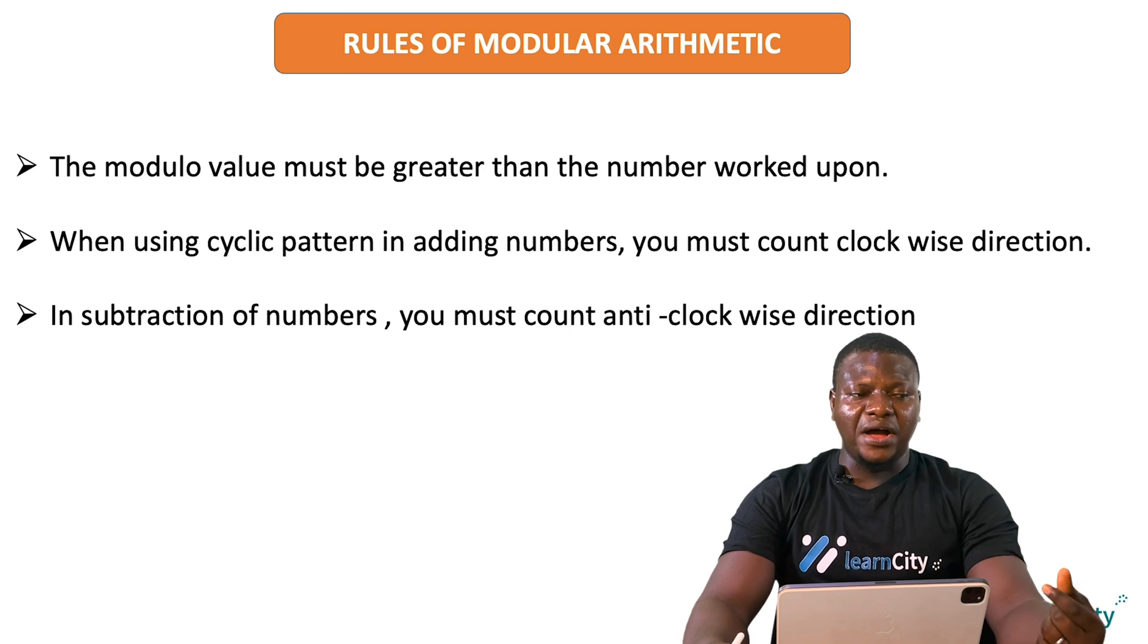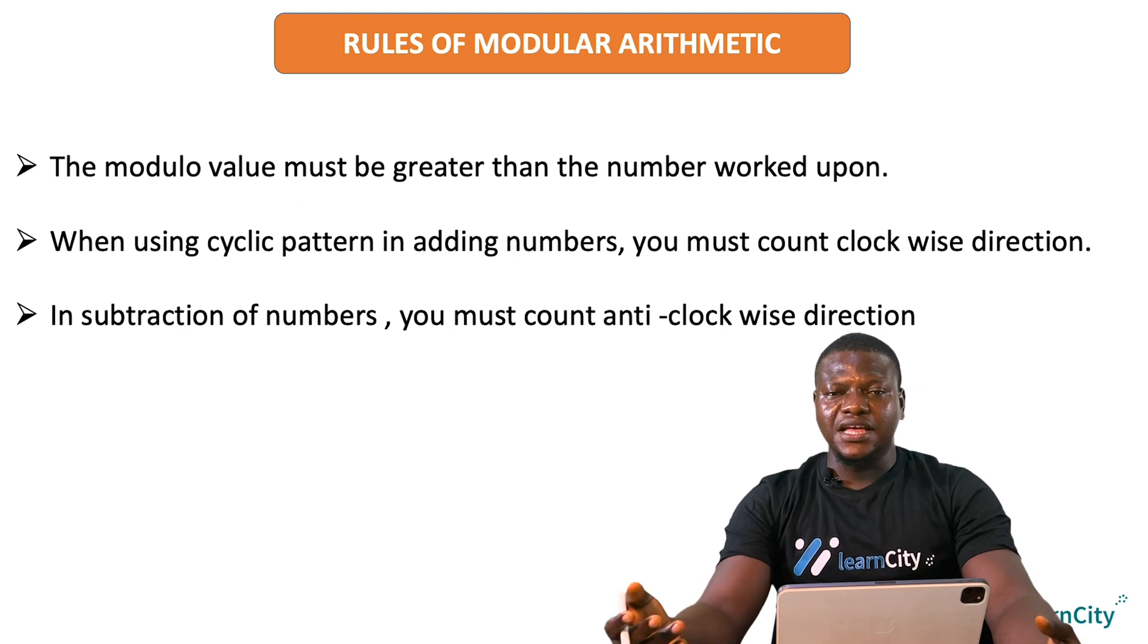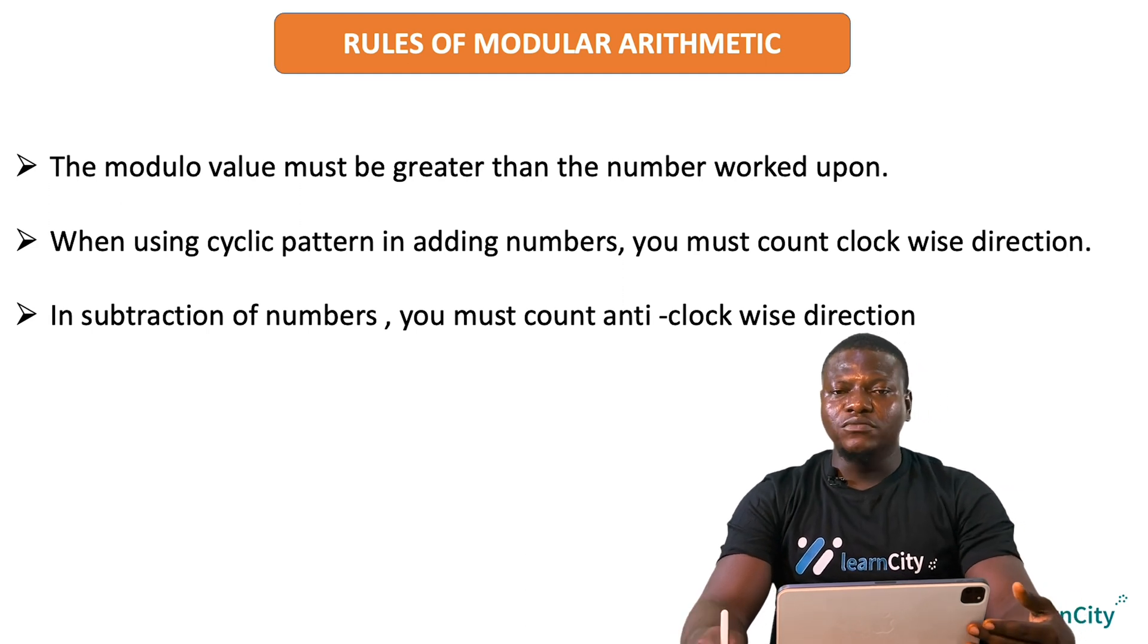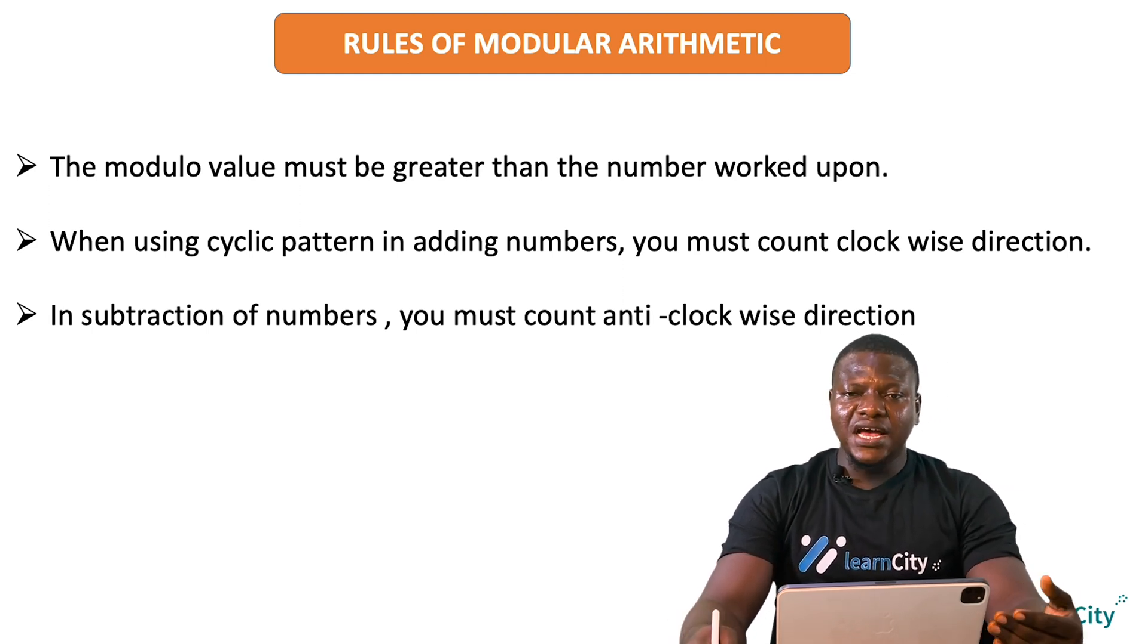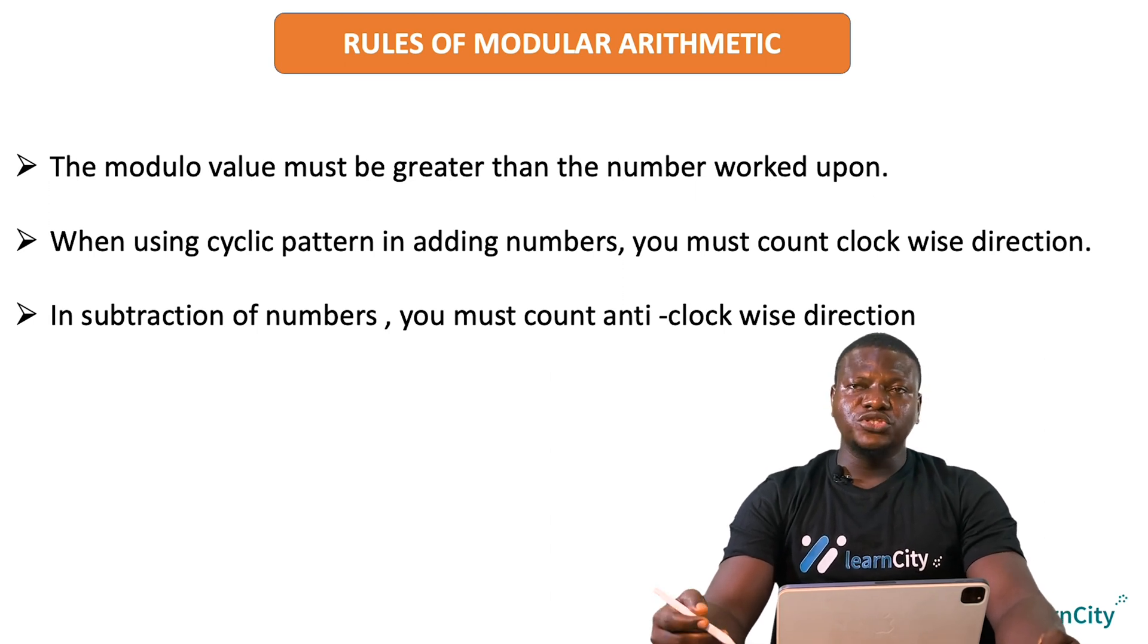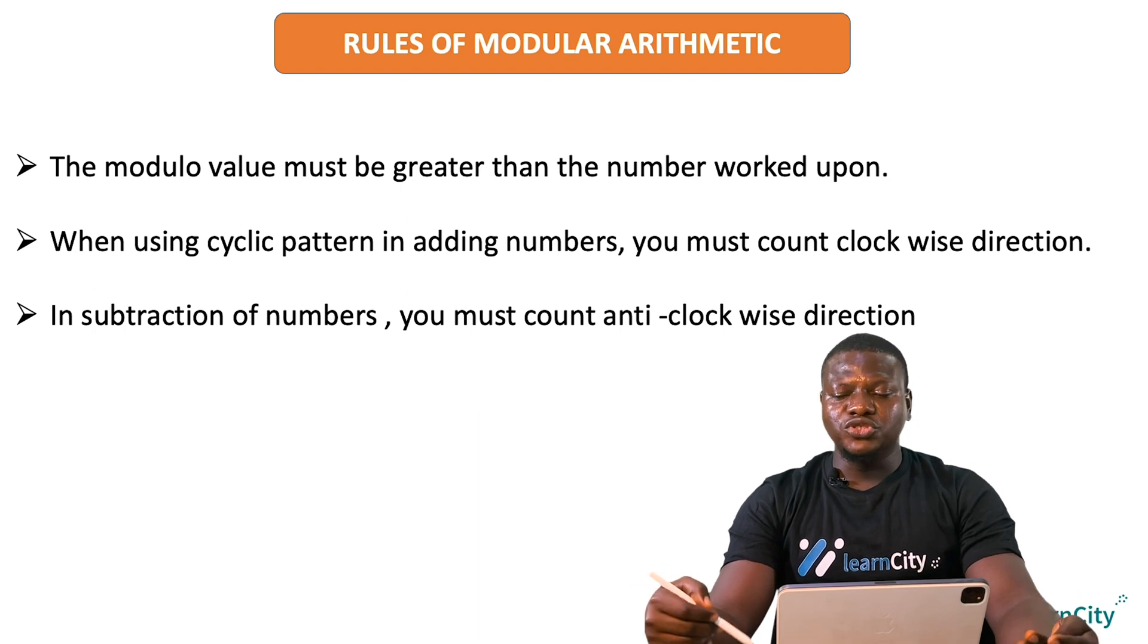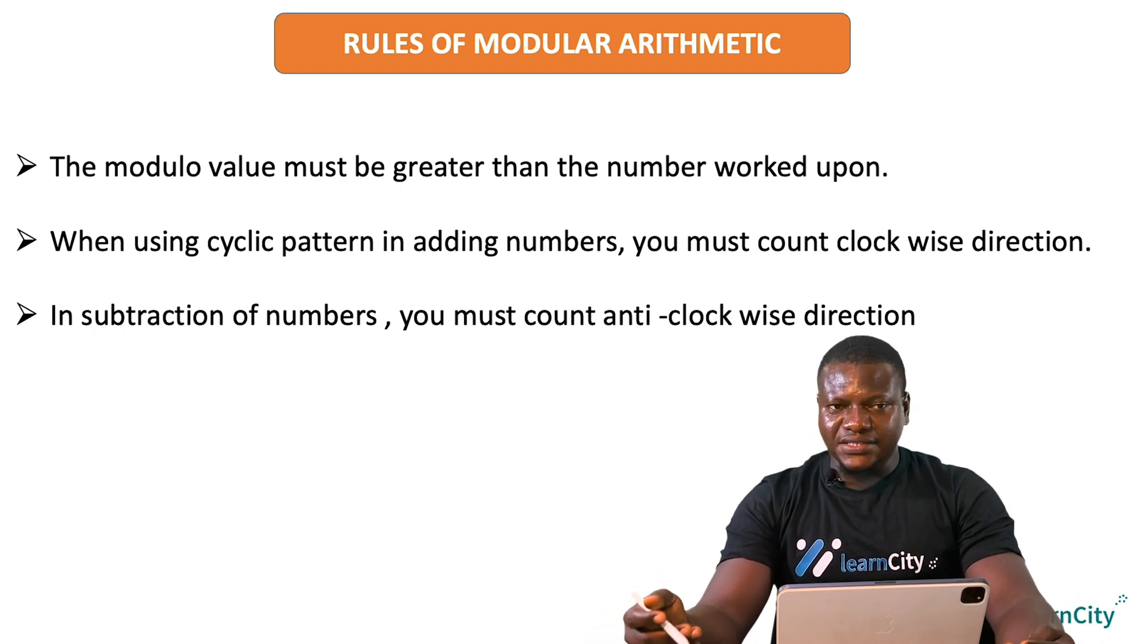What do we mean by this? If I'm in Monday now and we are working in modular seven with the days in a week, and we are in Monday and asking in three days time, I'm not going to start from Sunday. I will need to start from Tuesday, Wednesday and Thursday. When we are adding, we must not count in anti-clockwise direction. It must always be clockwise direction.